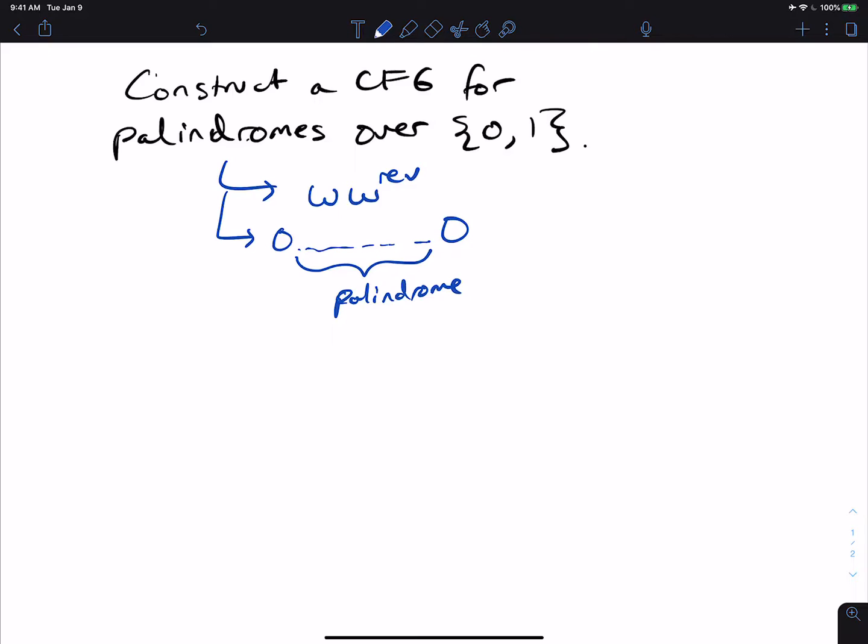So another way we can also think of this is the string might not be even in length. So maybe the middle part could be a single 0 or 1. So we're going to count 0, 1, and epsilon as valid palindromes.